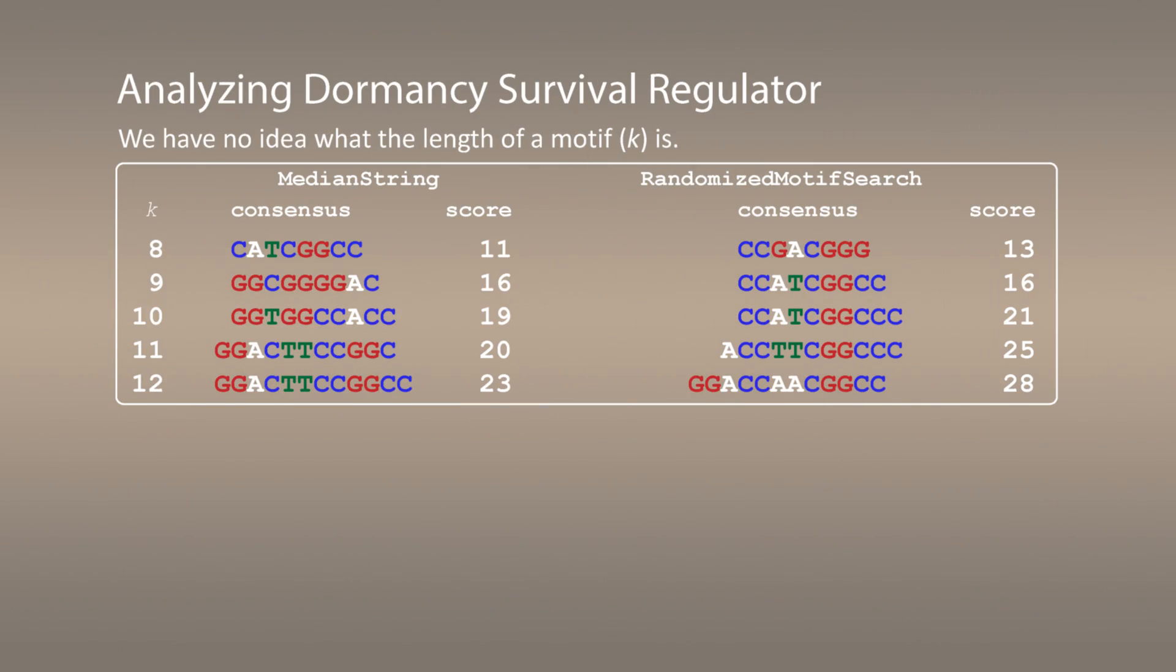We now have quite an arsenal of algorithms for finding motifs. Let's try them. But the first problem we have is we have no clue what size of motif to try. Should we try k equal 8 or k equal 20? Let's try all of them using median string problem and randomized motif search. You will see that for different k we are getting quite different results. It is not clear which one to choose.